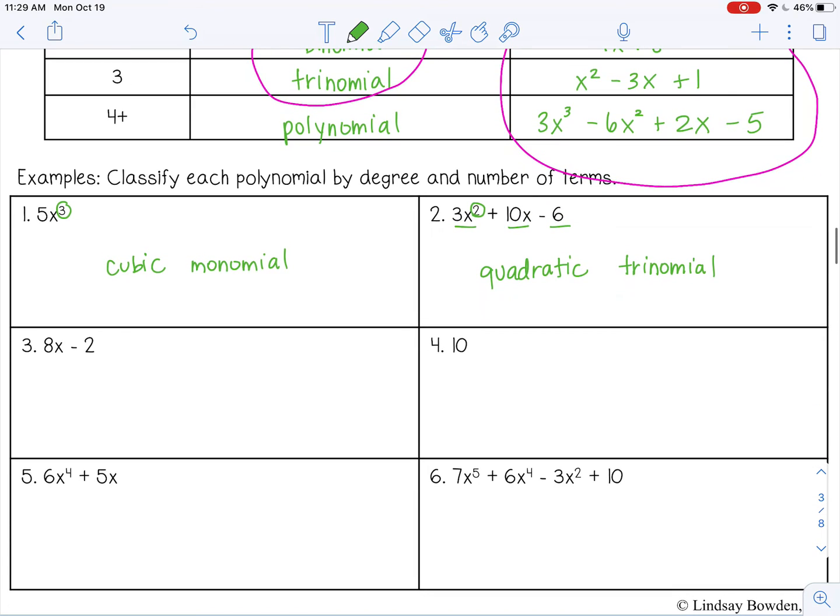Okay, pause the video now and try three through six by yourself. Number three has a degree of 1. You don't see it, but it's understood to be there. X to the first power, so it's linear. And it has two terms, so it's a binomial.